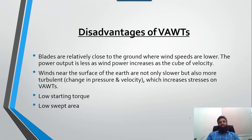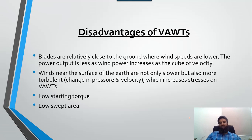The major disadvantages of the vertical axis wind turbine are: the blades are relatively close to the ground where wind speeds are lower; the power output is less as wind speed increases as a cube of velocity; and the wind near the surface is not only slower but also more turbulent due to buildings or trees, which increases stress on the turbine. Additionally, it has low starting torque and a low swept area.